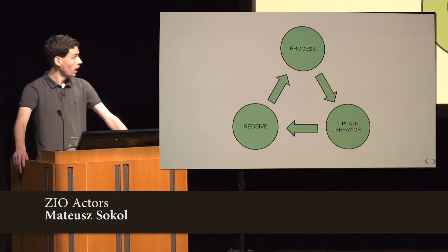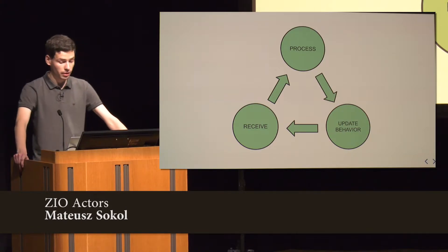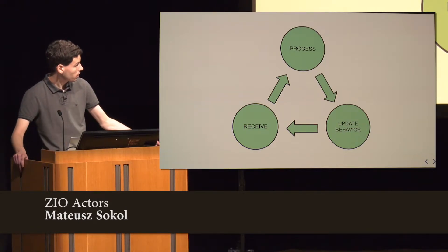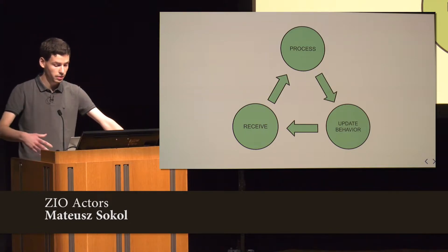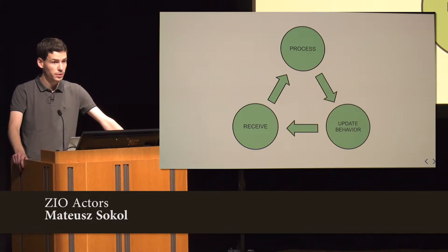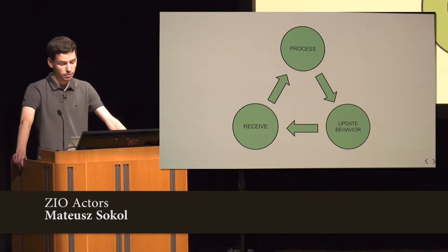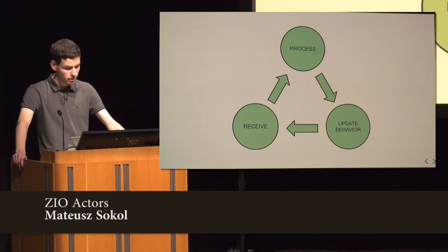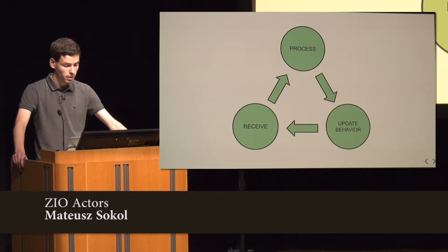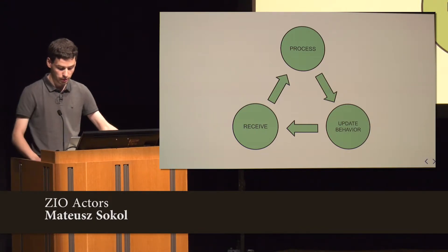Let's simplify actors to such a diagram. For us, actors receive messages, then the actor processes it in a concrete manner — while processing, an actor can spawn a finite amount of children actors and can send a finite amount of messages. After processing a message, we can update the actor's behavior, and it all repeats.